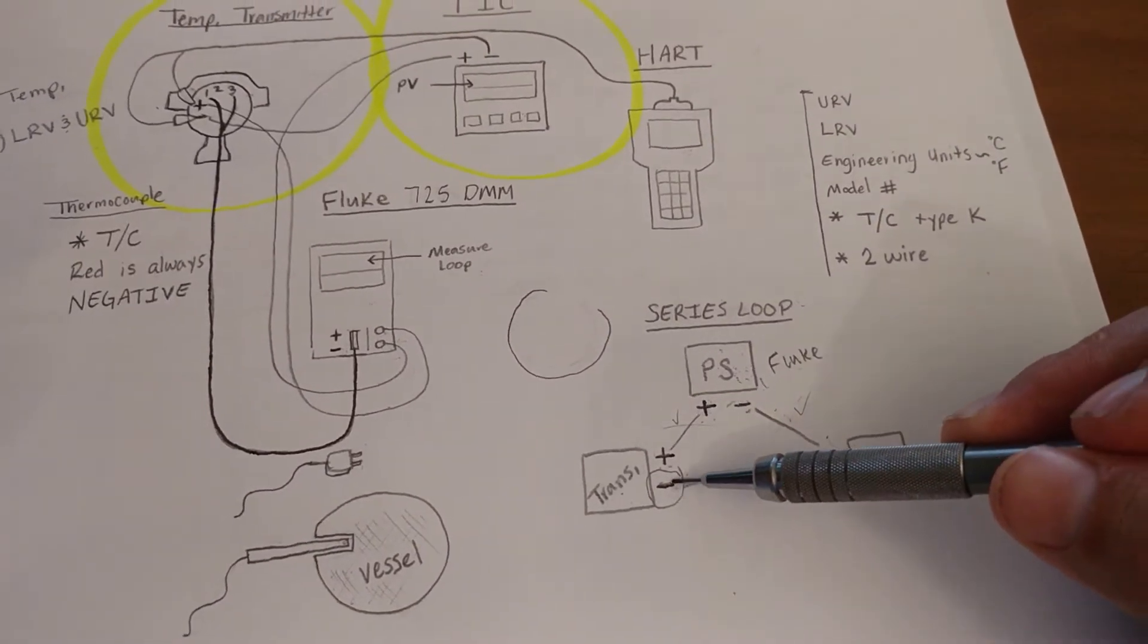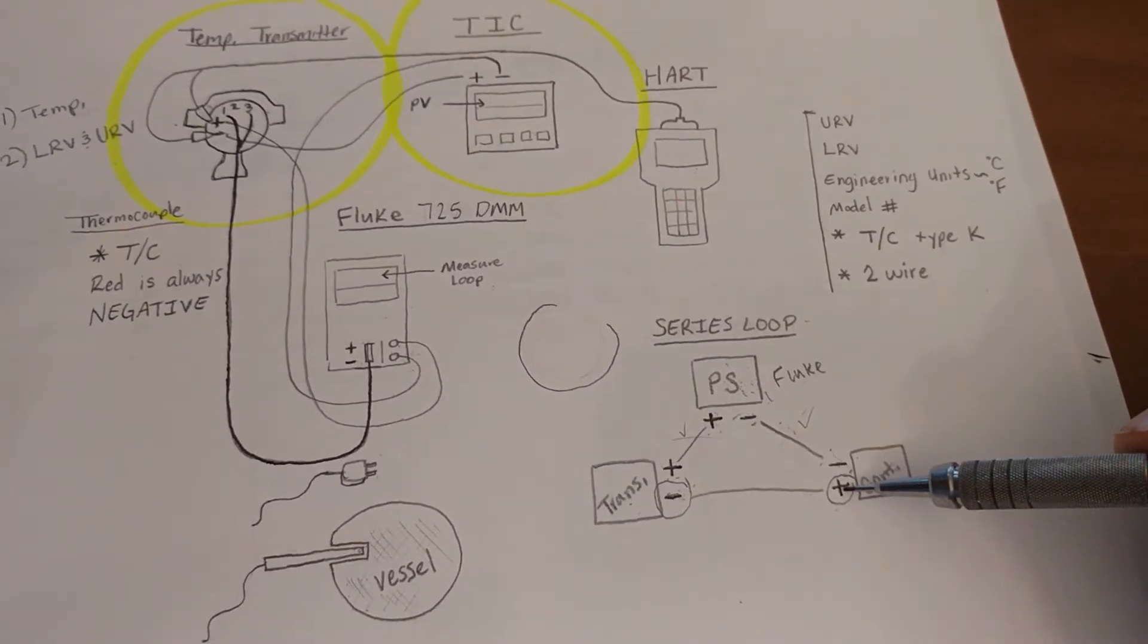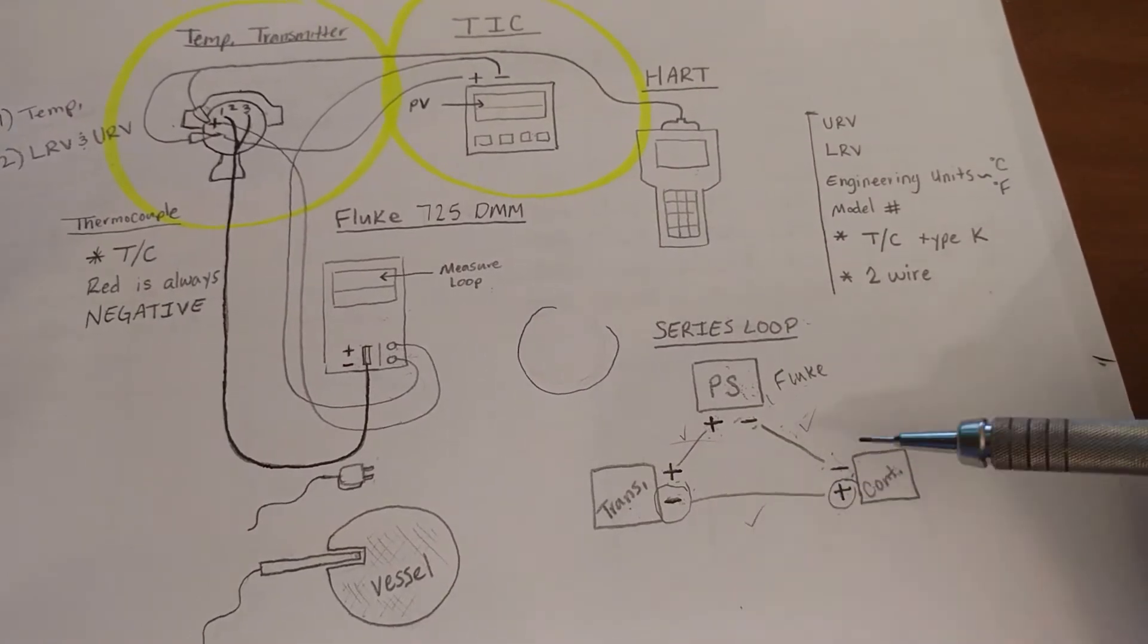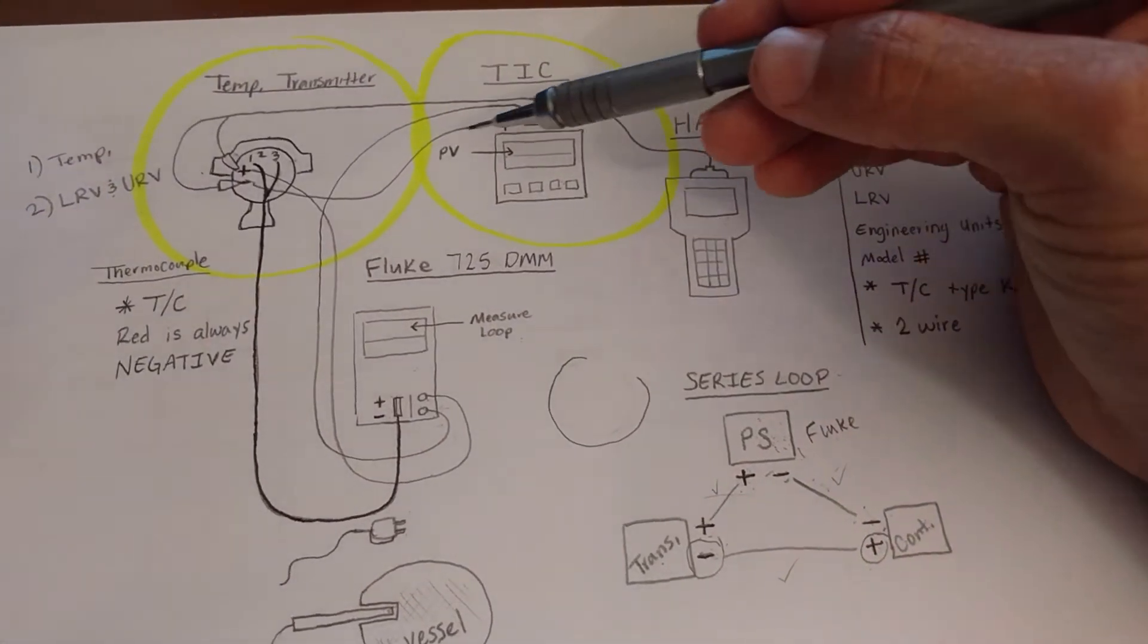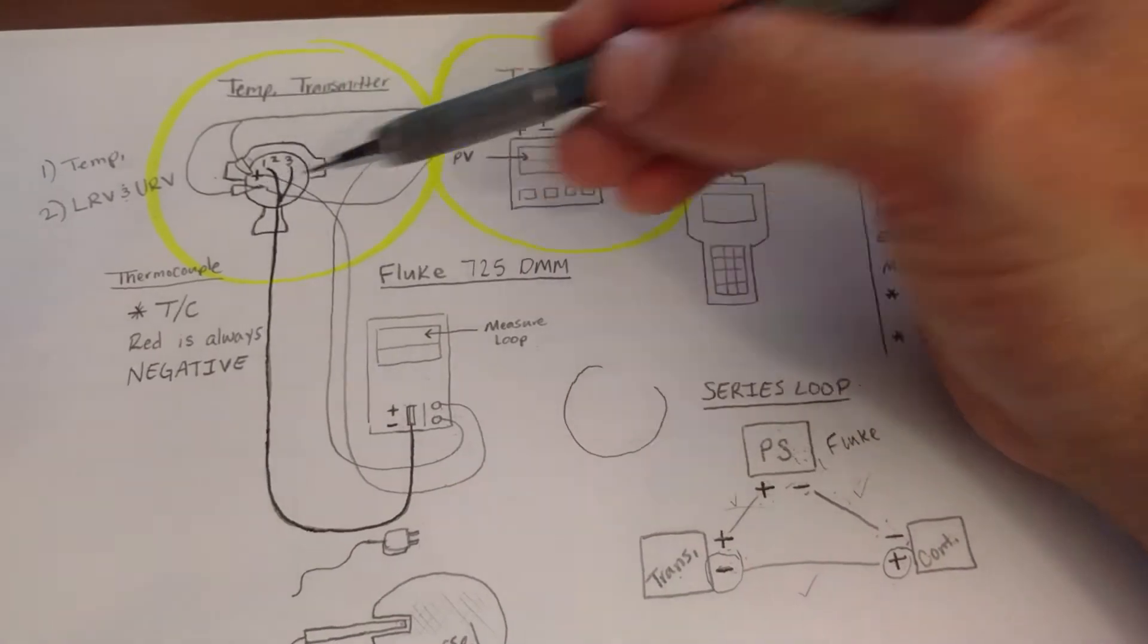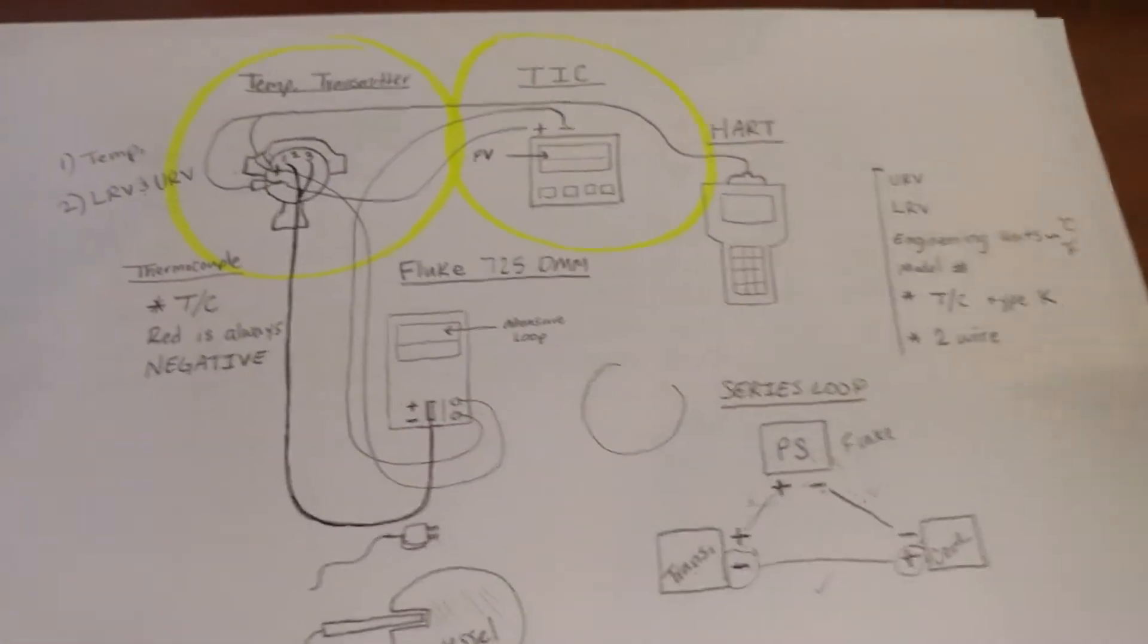Well, how about the last remaining terminals? A negative and a positive. Let's go ahead and knock that one out. Positive to a negative. So we have a complete series loop.